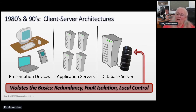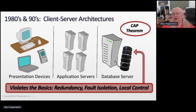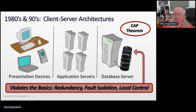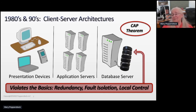Why was there just one central database? There was the CAP theorem, which said you can't have consistent data, completely available data, and partitioning all at the same time — you had to give up one. Of course, everybody gave up partitioning, and we migrated to massive central databases. The CAP theorem said you've got to have consistency and instant availability, so you had to give up any type of distributed database.